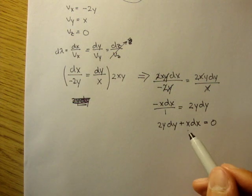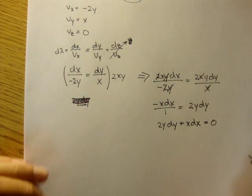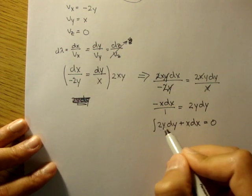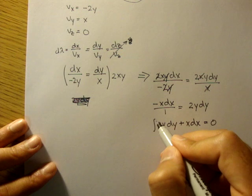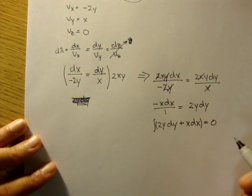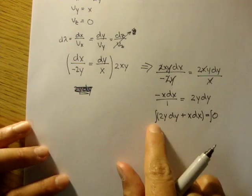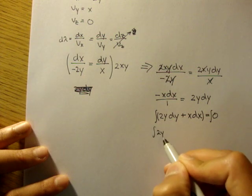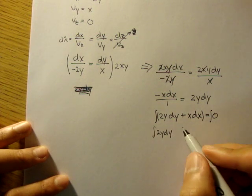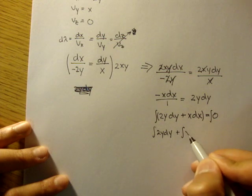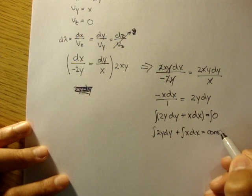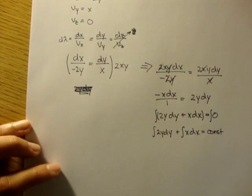And from here, we can integrate this entire function. We can split this up into two integrals. 2y dy, the integral of 2y dy plus the integral of x dx is equal to, well, the integral of 0 is just a constant.